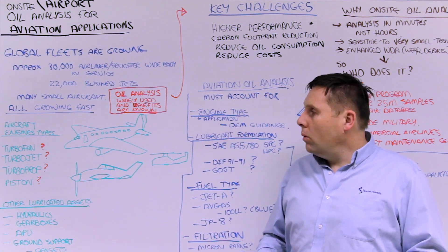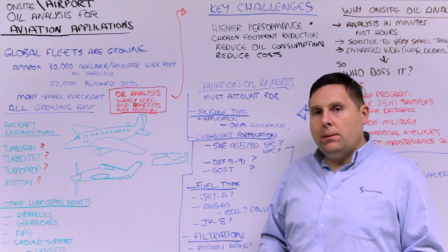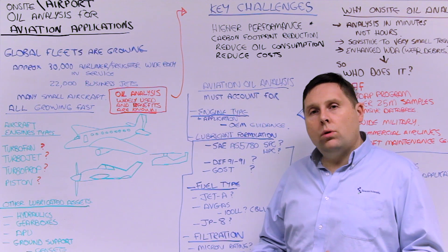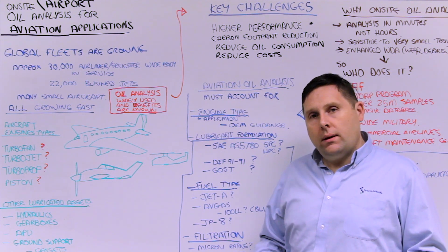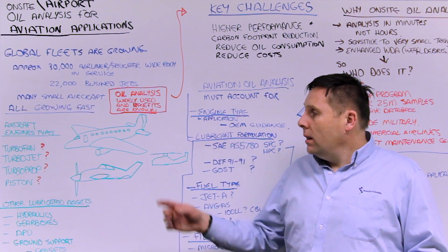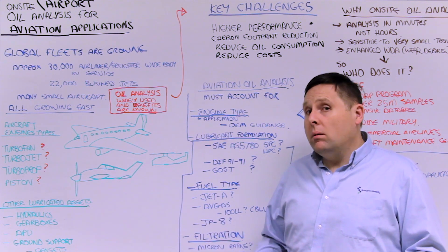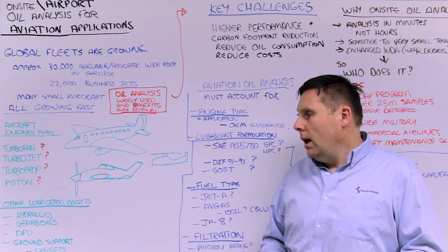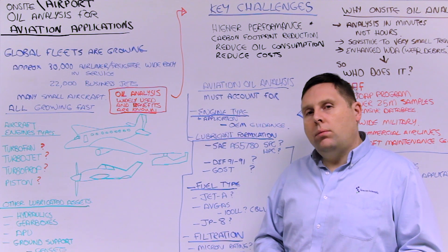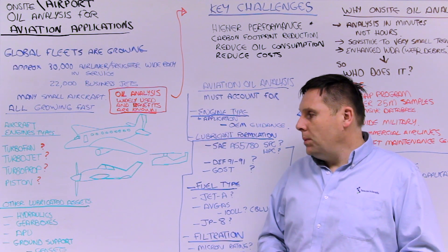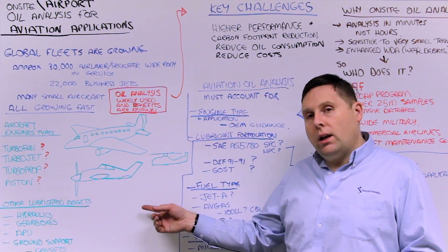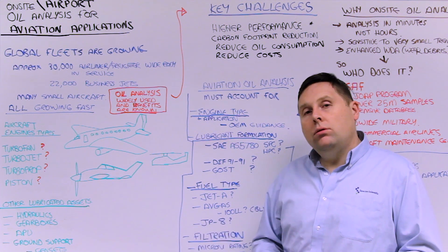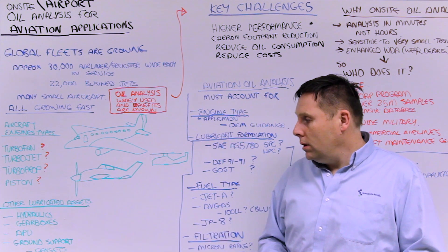For the most part, we're going to talk about aircraft engine types. There are different designs: turbofan, turbojet, turboprops, and piston engines. The majority have similar lubricants, but there are different lubricants depending on the application. There are other lubricated components in an aircraft, specifically hydraulic systems, gearbox systems, and APUs or auxiliary power units.